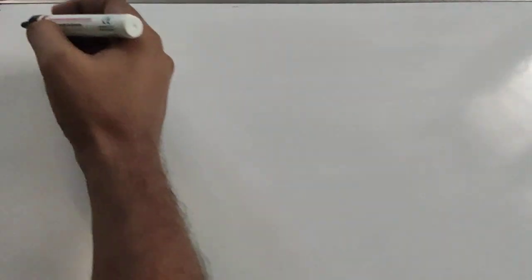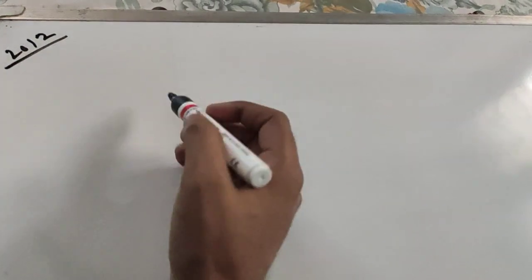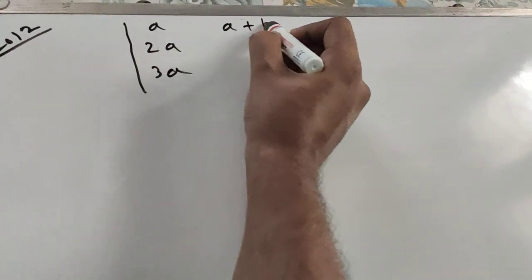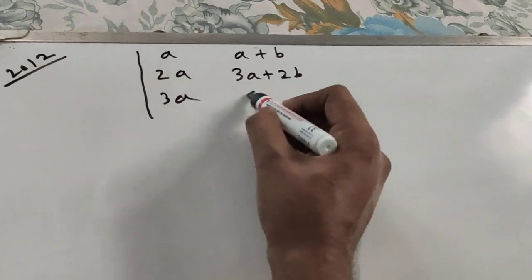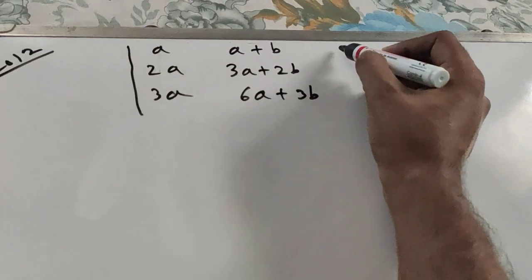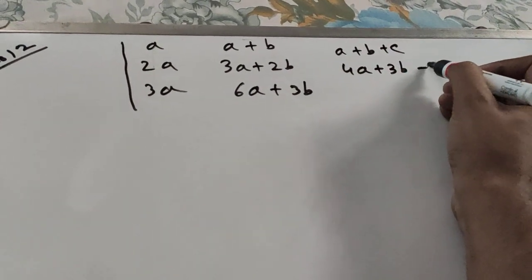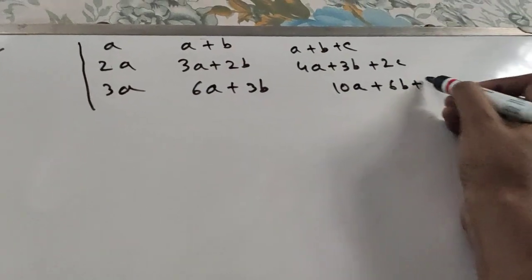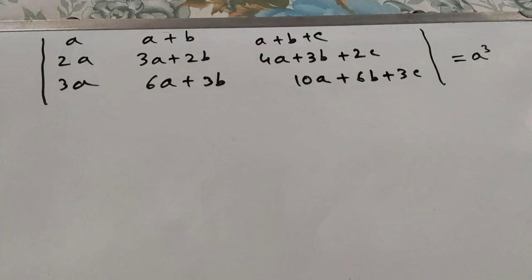Let's continue determinants after the last sum. We are starting today's 2012 question. Write the question first: a, 2a, 3a; a+b, 3a+2b, 6a+3b; and a+b+c, 4a+3b+2c, 10a+6b+3c — equal to a cubed. You have to prove this.